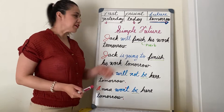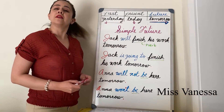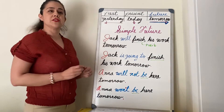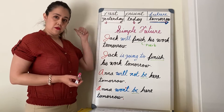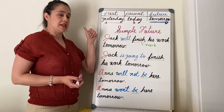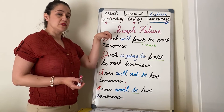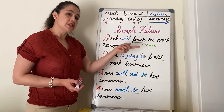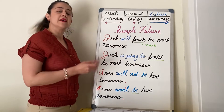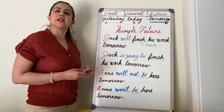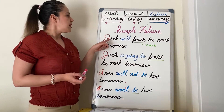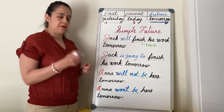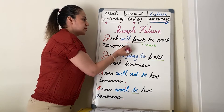Hello class, today we're going to talk about simple future. Take a look at the chart: past was yesterday, present is today, future will be tomorrow. Let's read the next example: John will finish his work tomorrow. Notice that we use the word 'will' and we use it before the verb.